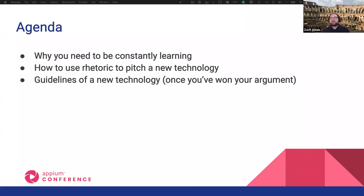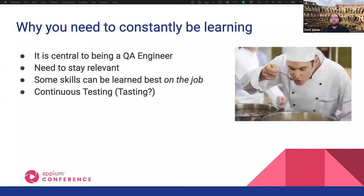We'll go over some guidelines for that new technology once you've won your argument and the right to implement something new. Why do you need to constantly be learning? It is central to being a QA engineer — you are constantly testing new things, the software you're testing is changing and being developed constantly. In this ever-evolving software landscape, you need to learn extra skills to stay relevant. As a QA engineer, you wear a lot of hats and you're central to the team. We all need to combat the stigma and devaluation of software testing — it is a critical role for all development work.